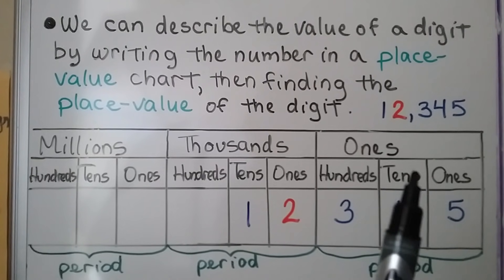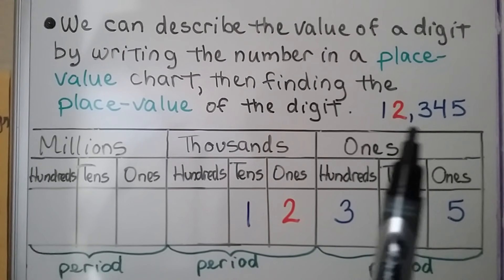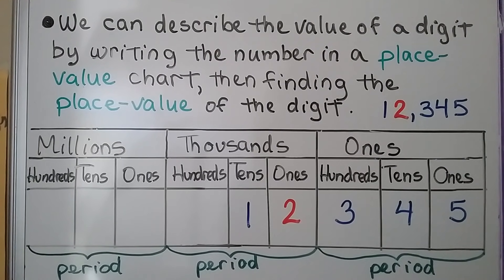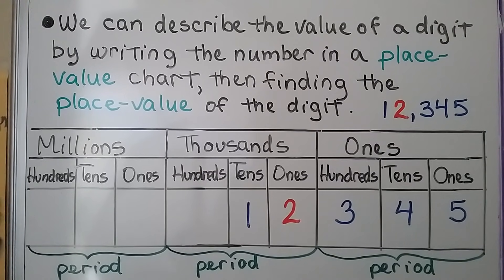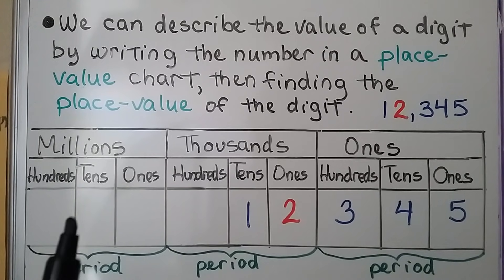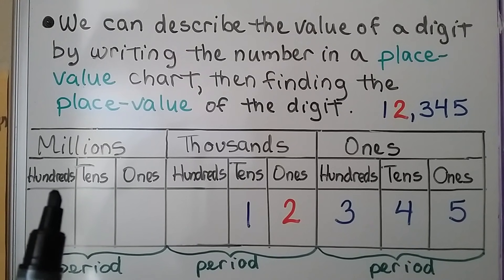We have this number here and we can write it into the place value chart. If you look at the chart, you notice that it's broken into three sections, and each section is called a period. This is the period for the ones, this is the period for the thousands, and this is the period for the millions.